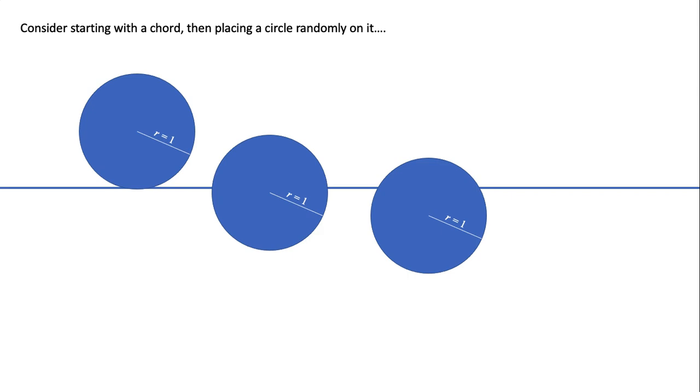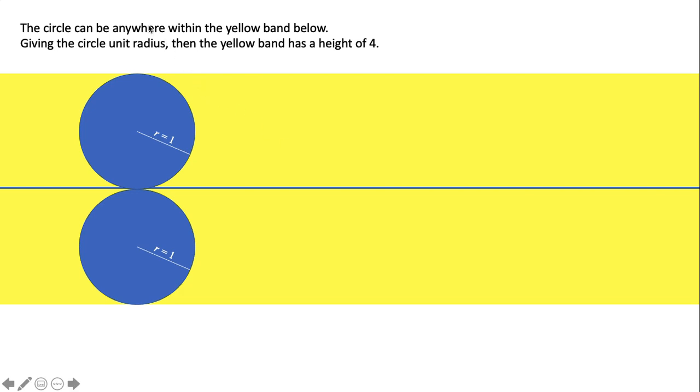So giving the chord a radius of one, a circle can be anywhere within that yellow band. I'm saying a chord can be where it just touches the circle. The difference is insignificant.